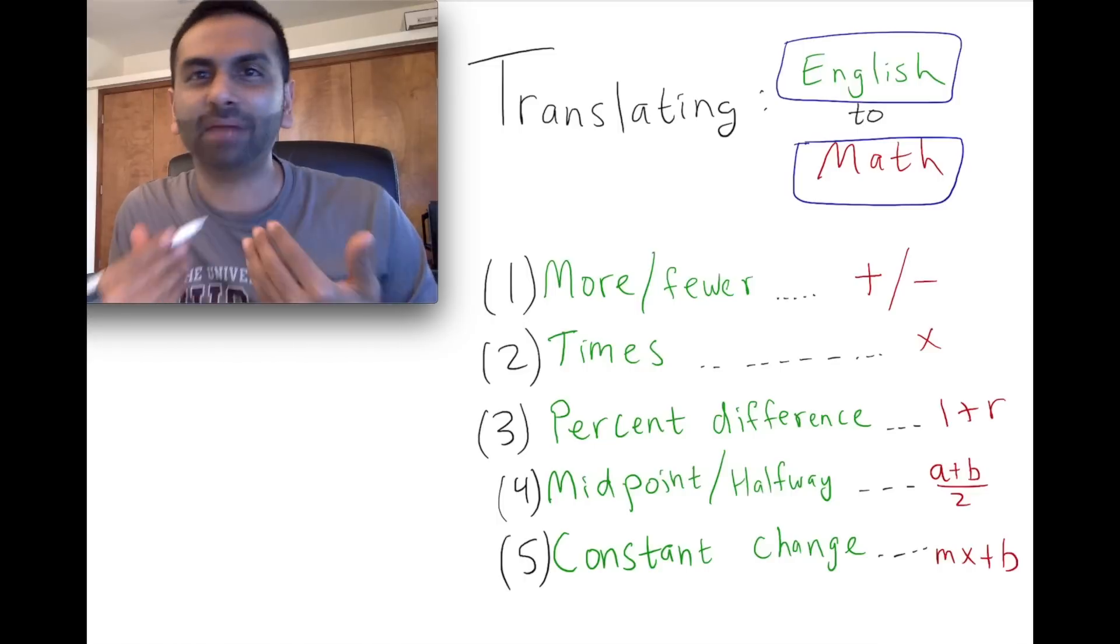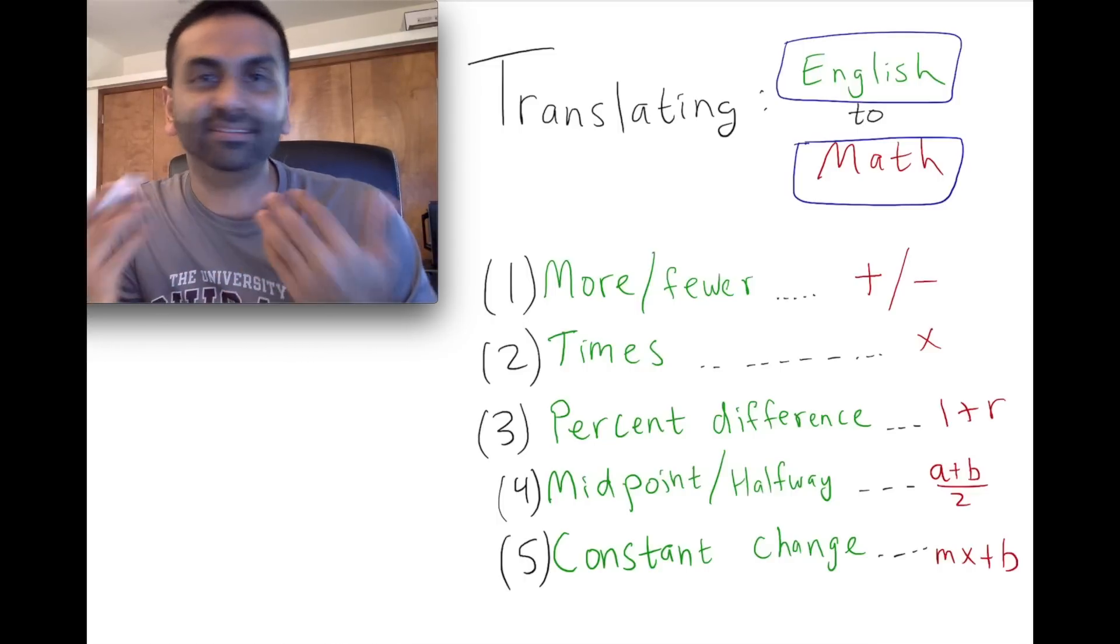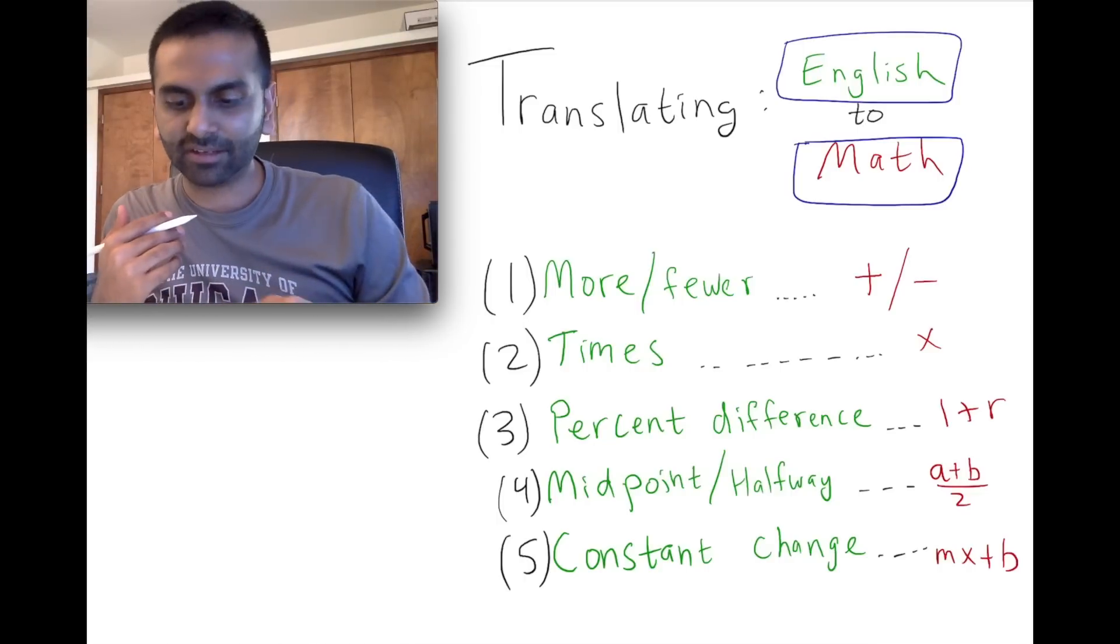literally be eight multiplied by the number of pennies. A lot of these things seem obvious, but when you see a sentence in English it's easy to get thrown off. So let's take a look at an example.